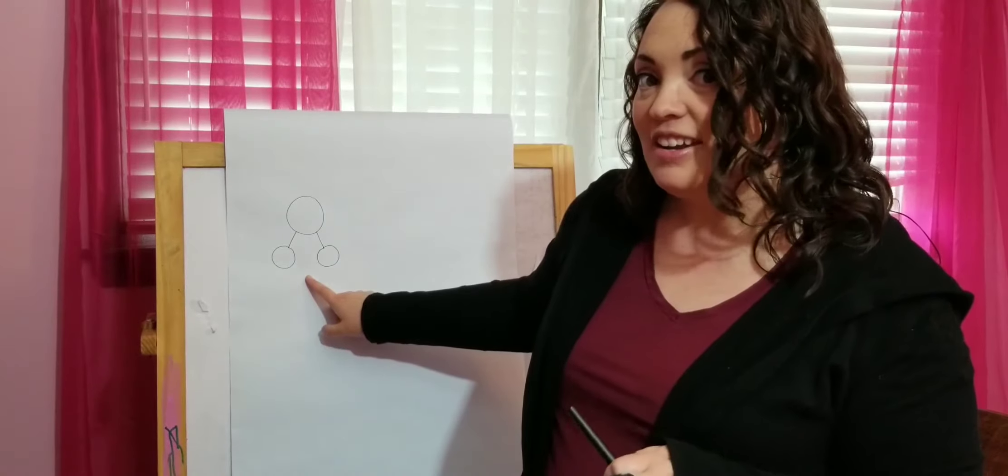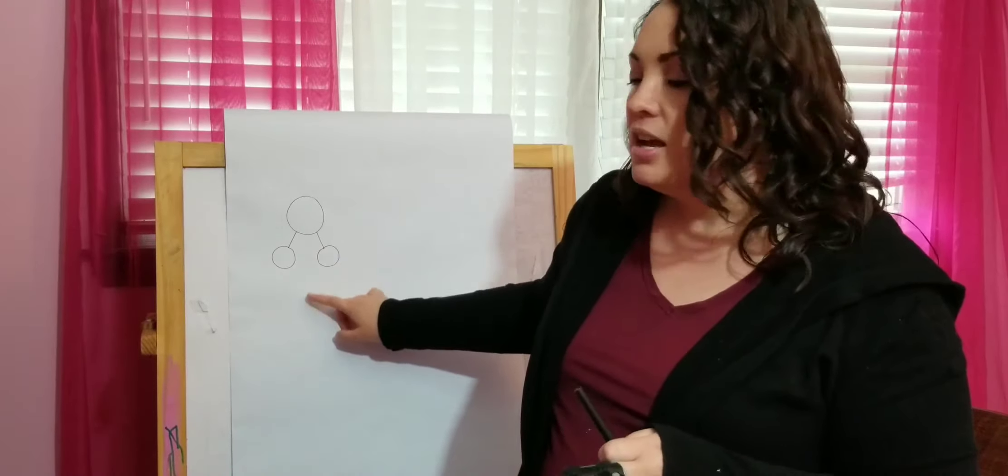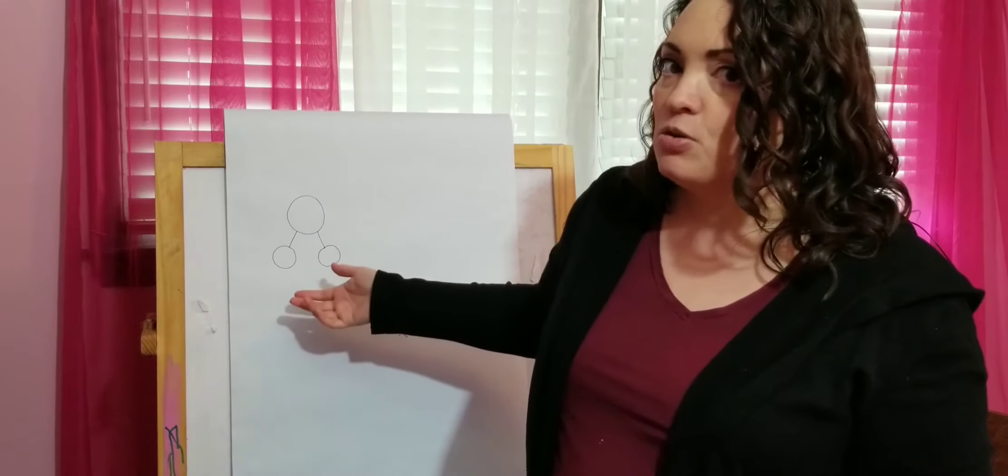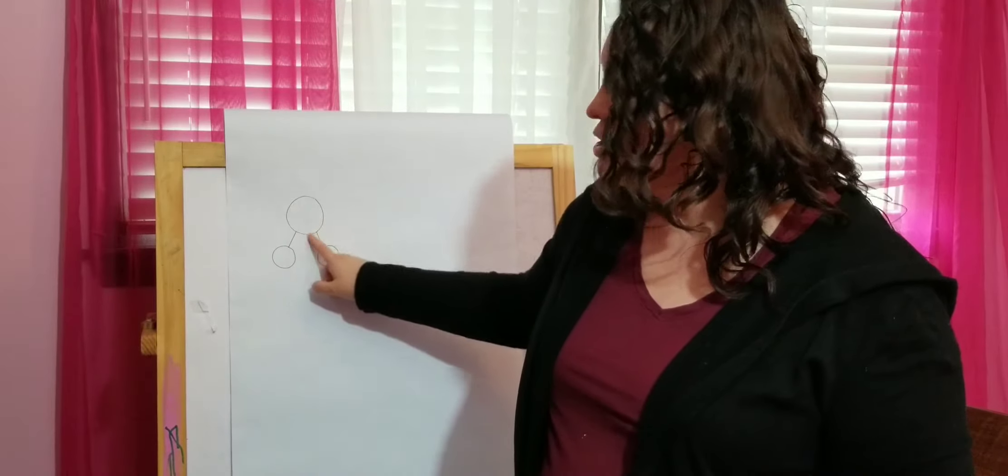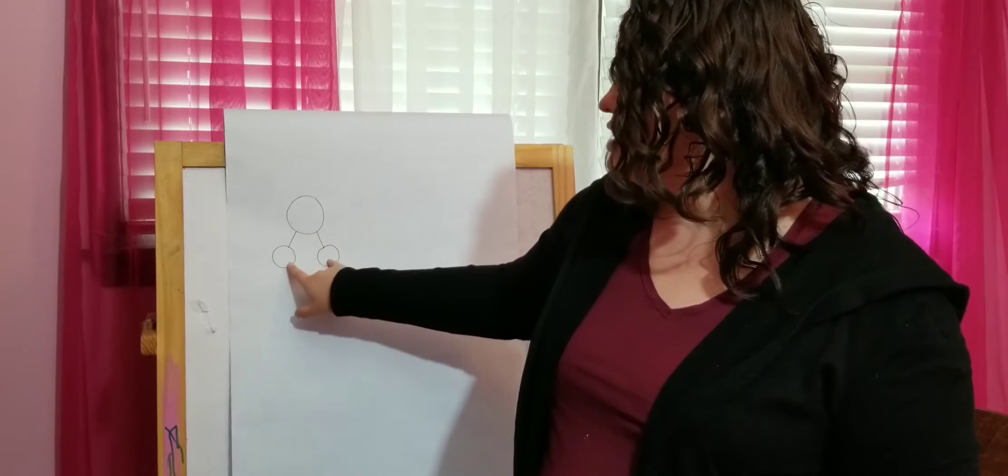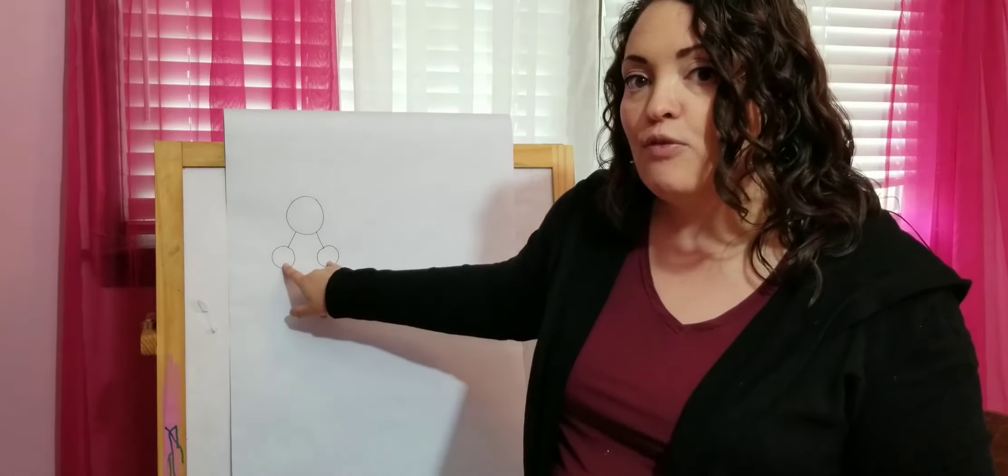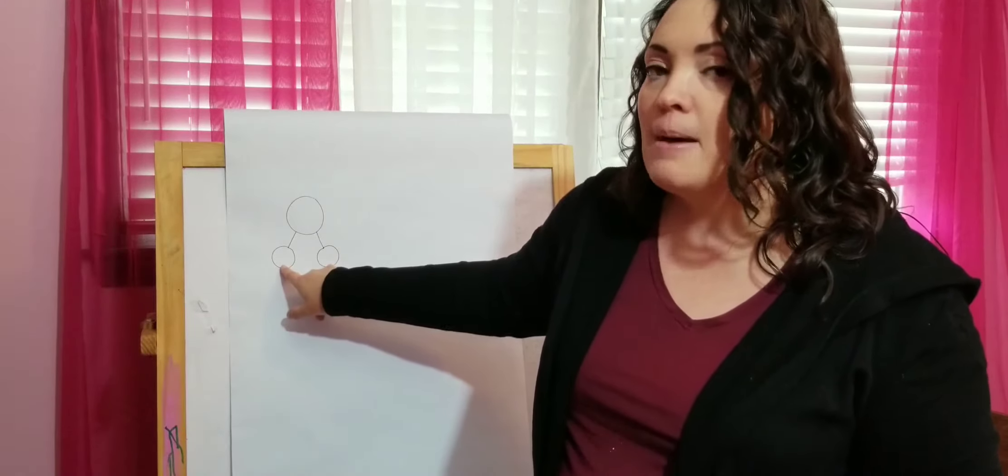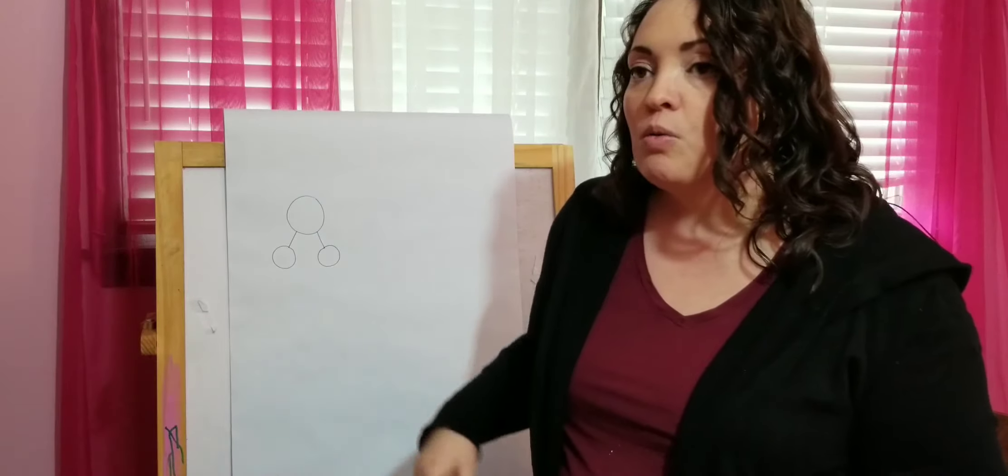So this is what a number bond looks like. It's three circles. Many times the circles are the same, but for this I made the whole circle, the big one. That's where we're going to put the whole amount. And then these two smaller circles are for the two parts that make up a number.